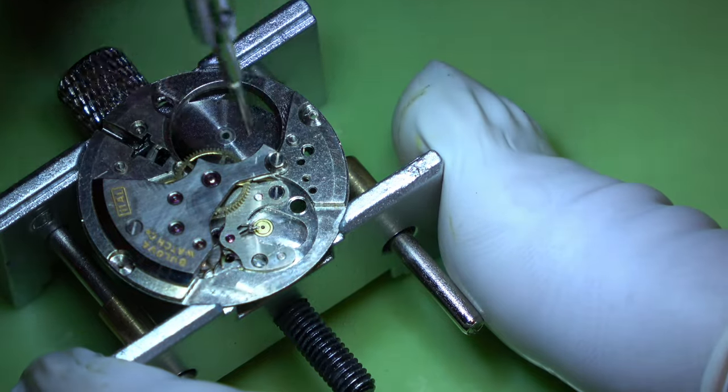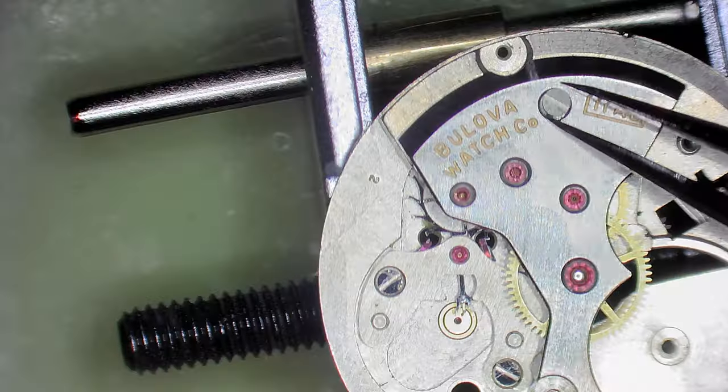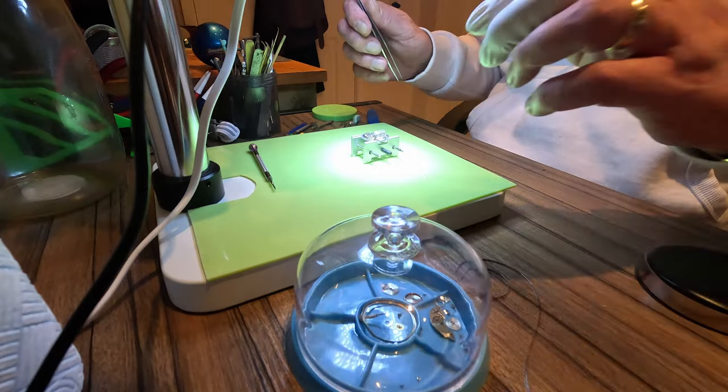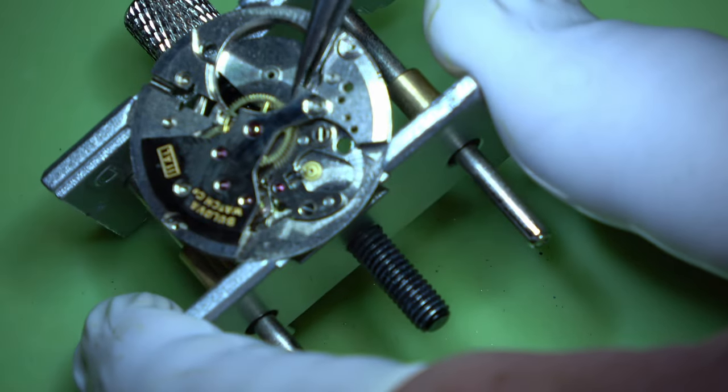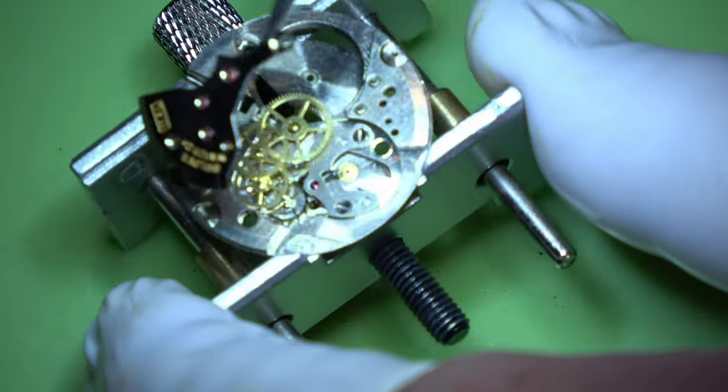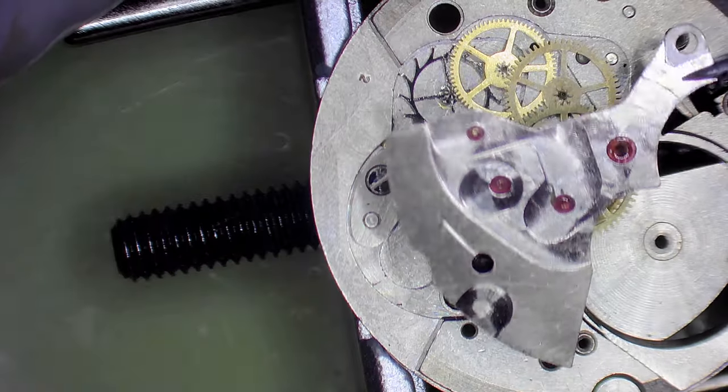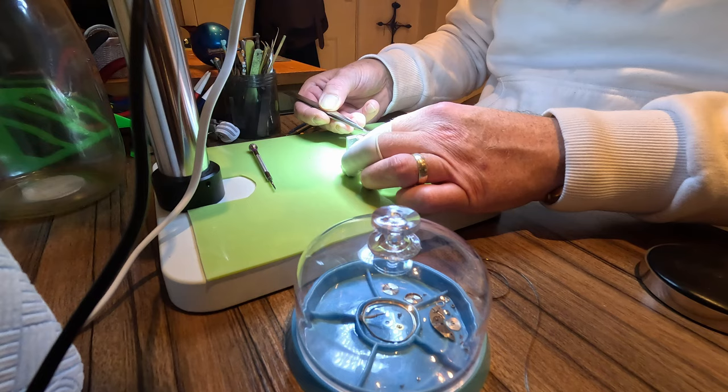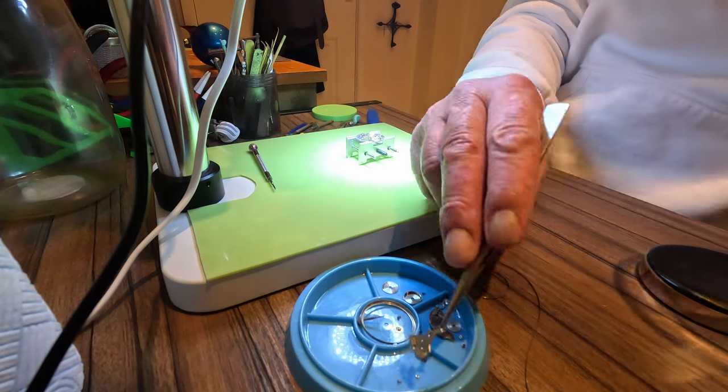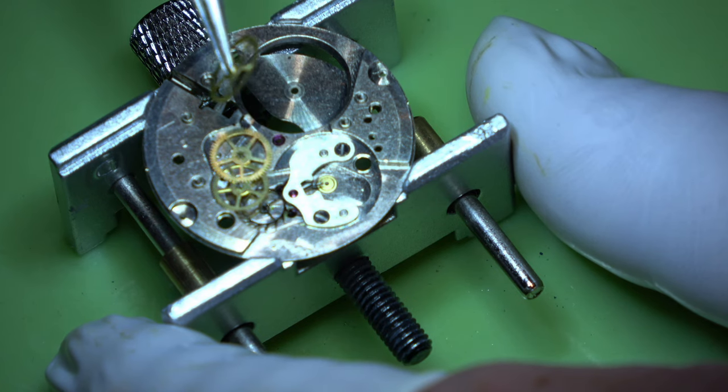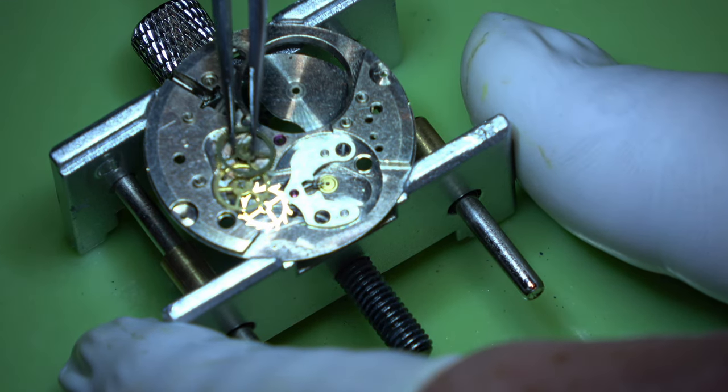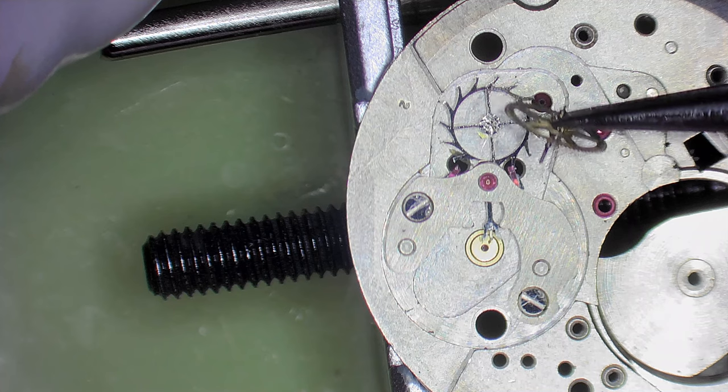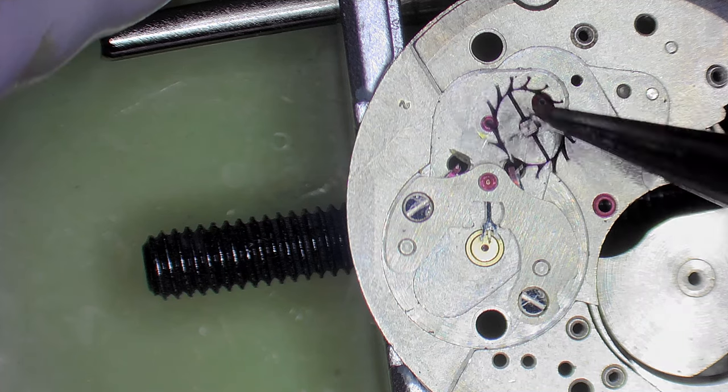We are going to remove the train wheels bridge. Those little pink things you can see, they are the jewels, actually artificial sapphires I believe. In the early days they used real ones, but now the artificial ones are much better. You get no inclusions or anything like that.